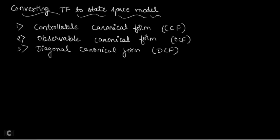Welcome to this video lecture. In this video lecture, let us learn about how to convert a transfer function into a state space model. The transfer function method of solving control system problems is a conventional method, while the state space method is the modern tool used to design and analyze your control system. If a transfer function is given, there should be some method to convert it to a state space model.